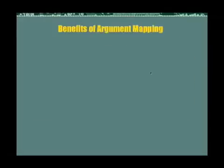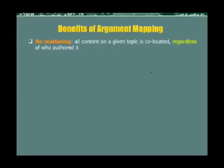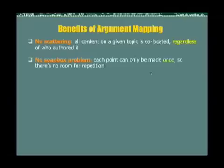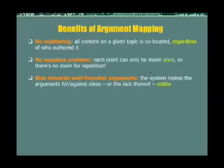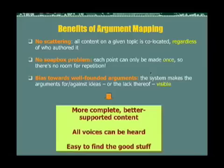So what are the benefits of using argument mapping in this way? First, there is no scattering — all content on a given topic is co-located, regardless of who authored it. There is no soap-box problem because each point can only appear in the argument map once, so there is no room for repetition, and small voices can be heard. There is also a bias toward well-founded arguments, as the system makes the presence or absence of arguments for or against ideas quite visible. The result is more complete, better-supported argument, all voices can be heard, and it's easy to find the good content.